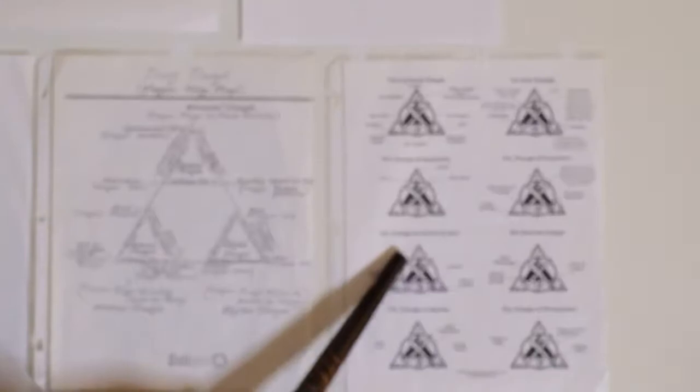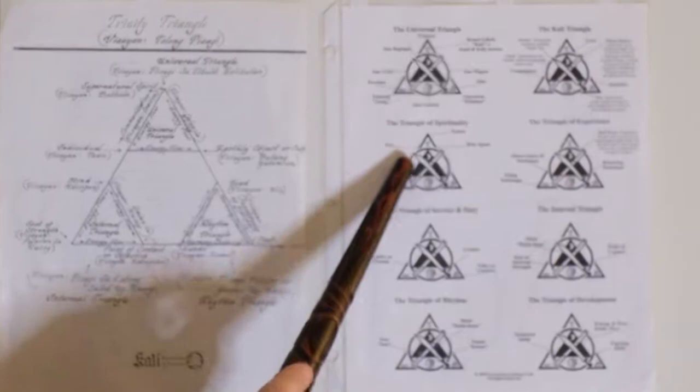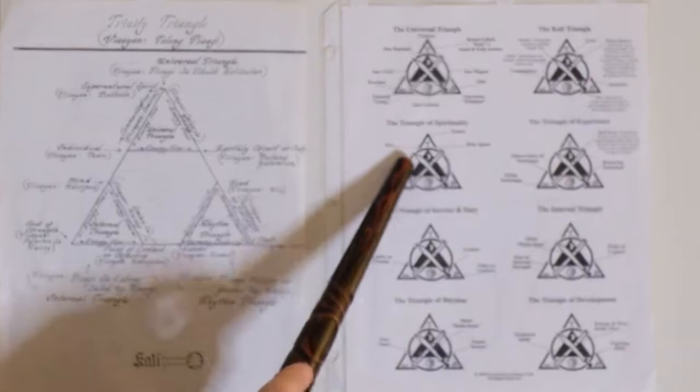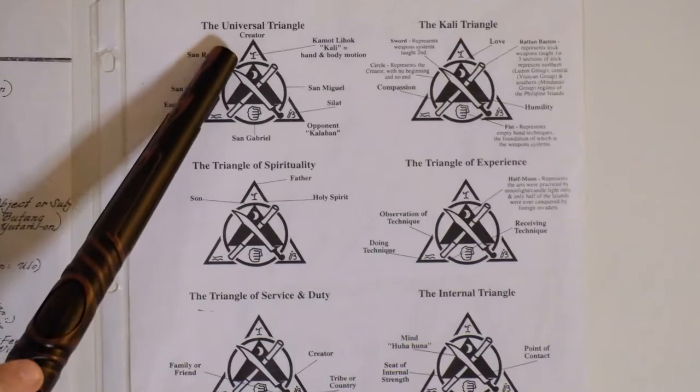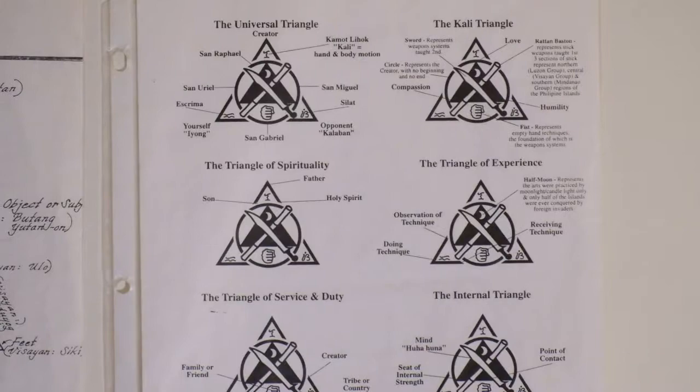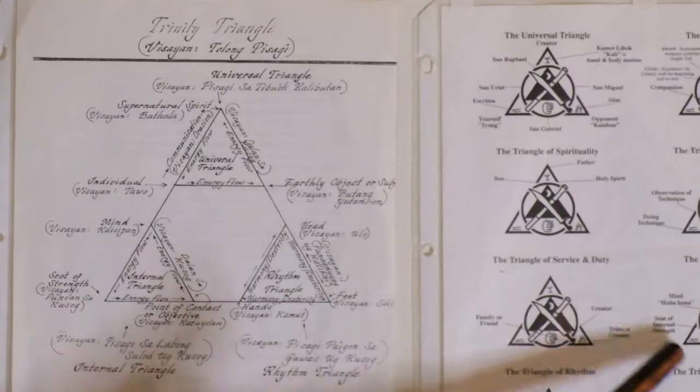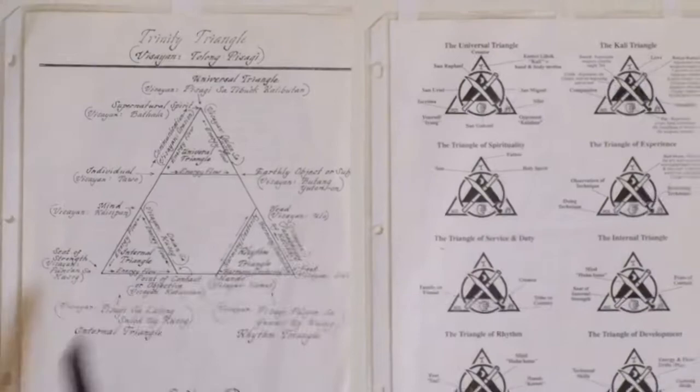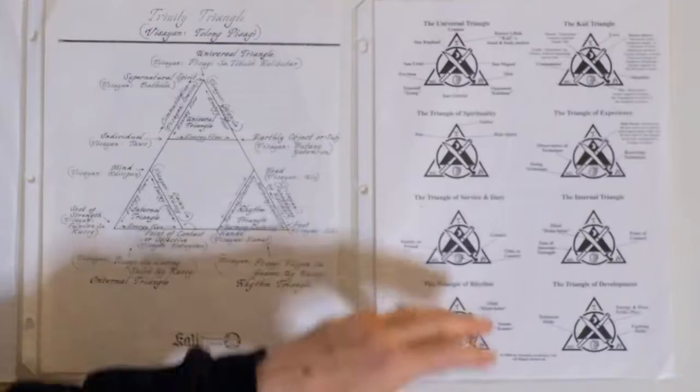So if we come over here now, we can see how the Lagusa Kali system, the Flo Vila Vila and Lagusa system, had influence on the Inosanto system. So in the Inosanto, we can see his triangles, and we can see the universal triangle, same thing here. And then we can see the rhythm triangle, which is over here, the same thing. And then we can see the internal triangle, which is over here as well. So you can see the influence that Lagusa and Floral Vila Vila had on Inosanto, and Inosanto has his triangles as the same.